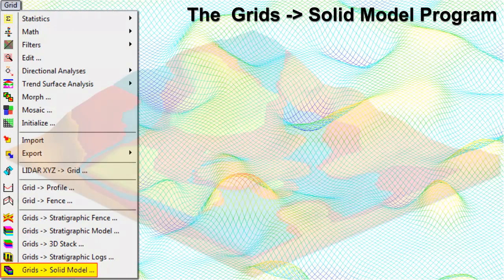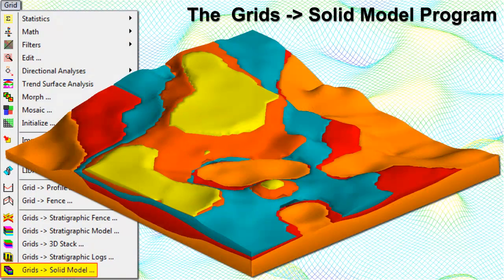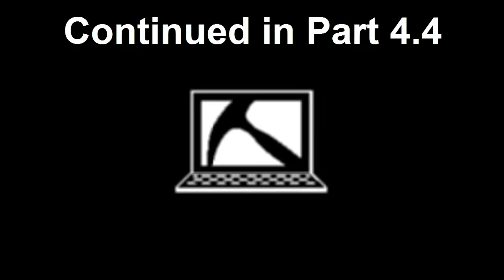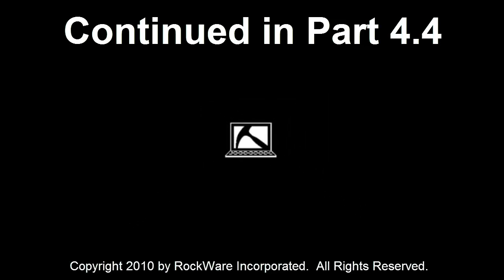The Grids to Solid program is used to create a 3D stratigraphic solid model based on a list of existing grid models that represent the top or superface and base or subface of each unit.